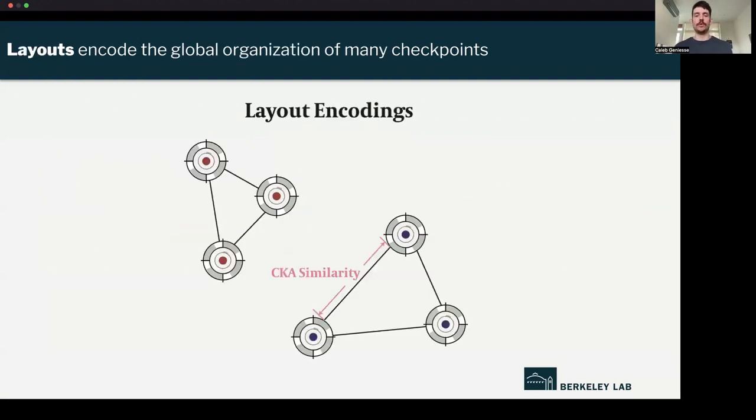Now we have a global layout, which is based on the CKA similarity. This is the representational similarity. We compute this between every pair of models and use this to do some sort of dimensionality reduction to create a two-dimensional view. In this view, the further that two checkpoints are away from each other, the less similar they are. And the closer they are in this view, the more similar they are.